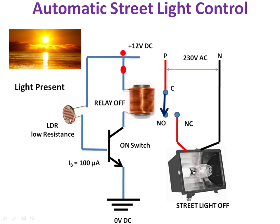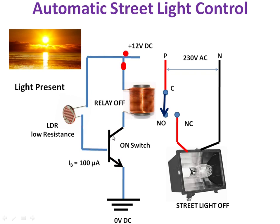To summarize: if light is present, the LDR resistance becomes low, causing current to flow through the base — say 100 microamperes. The transistor acts as an on switch, allowing current through it. When current flows through the relay coil, the relay turns on, and the switch is transferred to NO. Automatically the street light turns off.